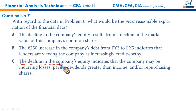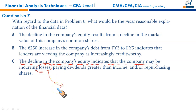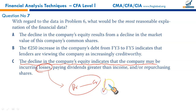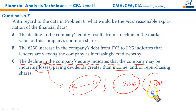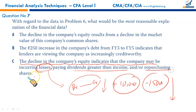The decline in equity indicates the company may have incurred losses — losses debit equity, so when debited against credit, equity falls. Alternatively, dividends paid greater than income earned reduce equity, or the company may have repurchased shares as treasury stock. These are all valid reasons why equity could have fallen — it could be any of these or a combination. C is the right answer.